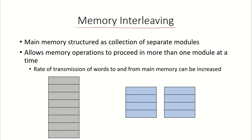Think of the main memory as one contiguous unit of addresses. We have one module with various addresses: address 0, address 1, 2, 3 and so on. Whether these are word addresses or byte addresses depends upon whether the memory is byte addressable or word addressable.